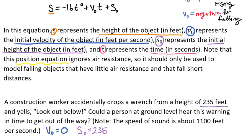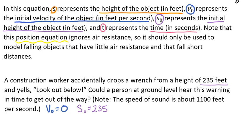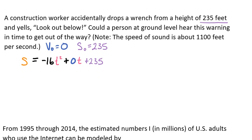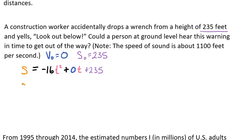We can plug in our model for s. We say s equals negative 16t squared where negative 16 represents gravity's effect plus 0t plus 235. So we're going to have s equals negative 16t squared plus 235.